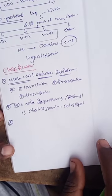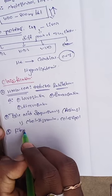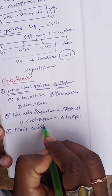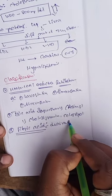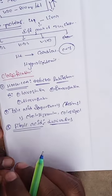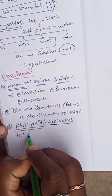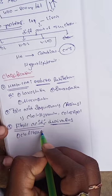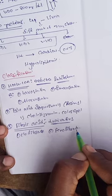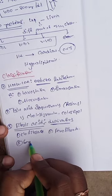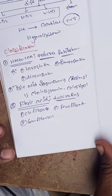The third classification is fibric acid derivatives. Examples of fibric acid derivatives include: clofibrate, fenofibrate, and gemfibrozil.